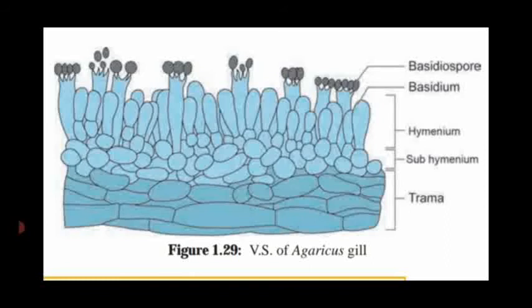The entire surface of the gills — upper and lower — is named hymenium. Below the hymenial region is known as sub-hymenium. This sub-hymenium layer is made up of compactly arranged cells. The hymenium layer contains club-shaped structures called basidia. These basidia are interrupted by a sterile region named paraphysis. Each basidium produces four basidiospores. These basidiospores are produced on small slender stalk-like portions called sterigmata. The oval-shaped structures at the tip of the sterigmata are the basidiospores.